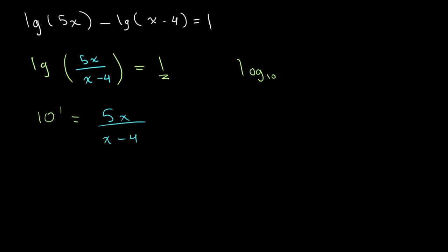And now what's left is just algebra. So we can multiply both sides by x minus 4. We get 10 times x minus 4, and this is equal to 5x. So from this we get 10x minus 40 is equal to 5x. Let's collect like terms. So we get 10x minus 5x, which equals 5x.